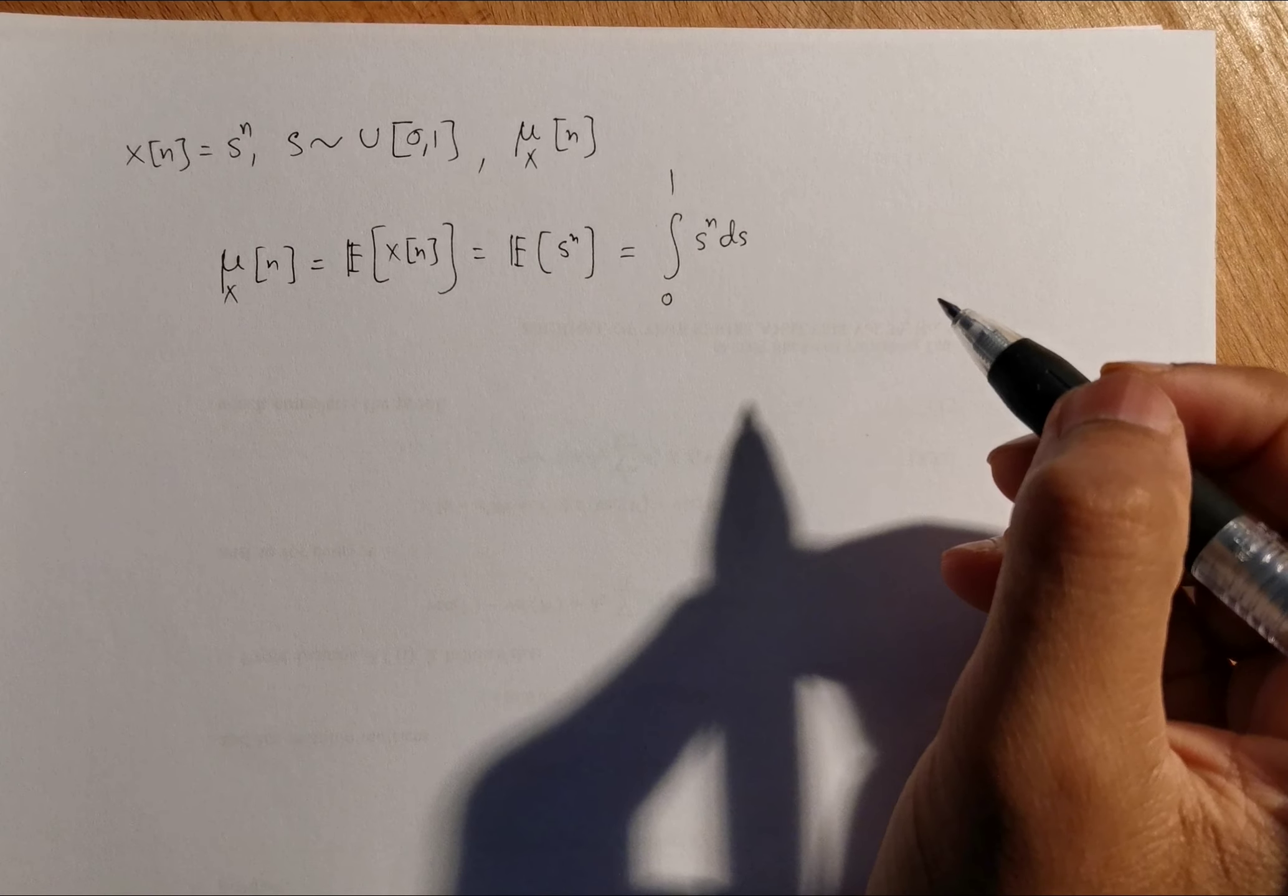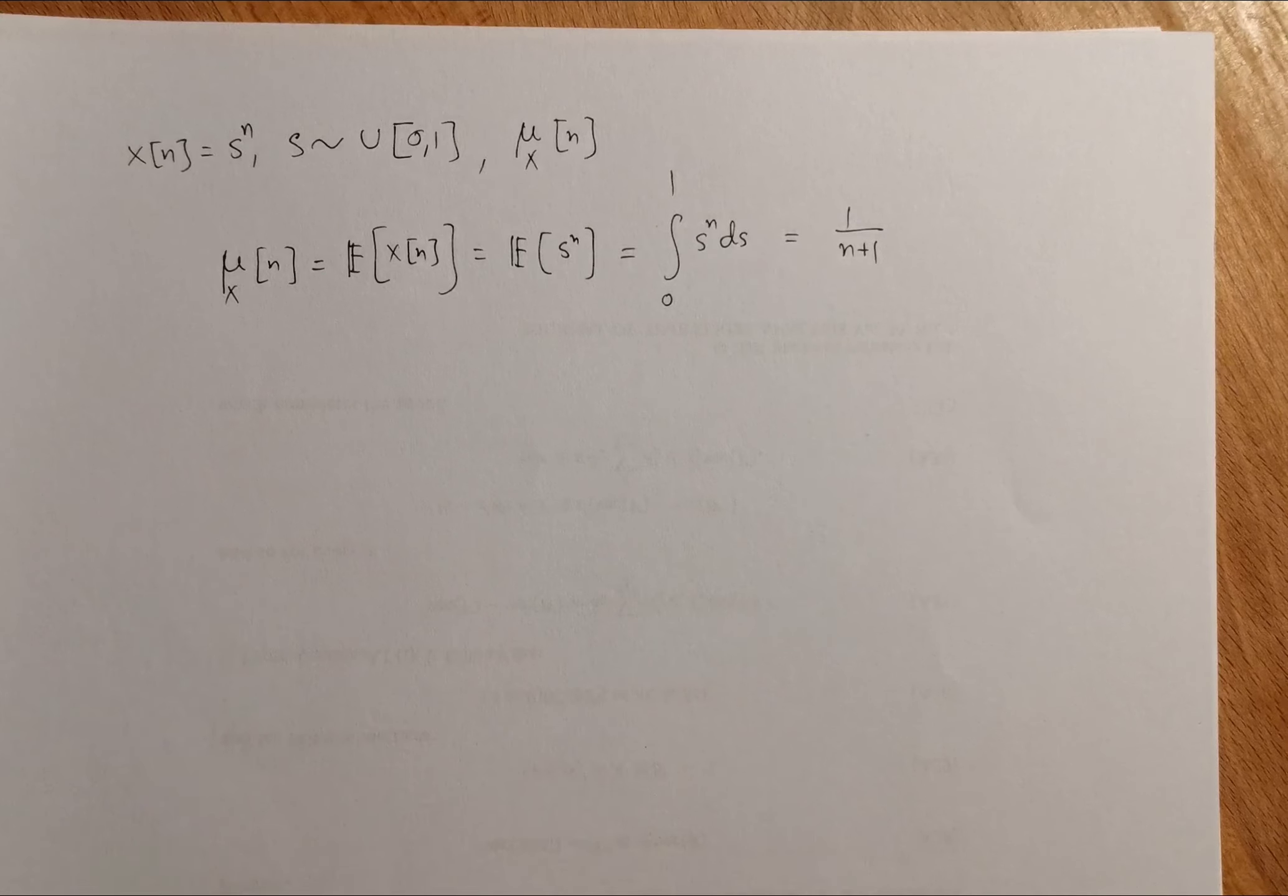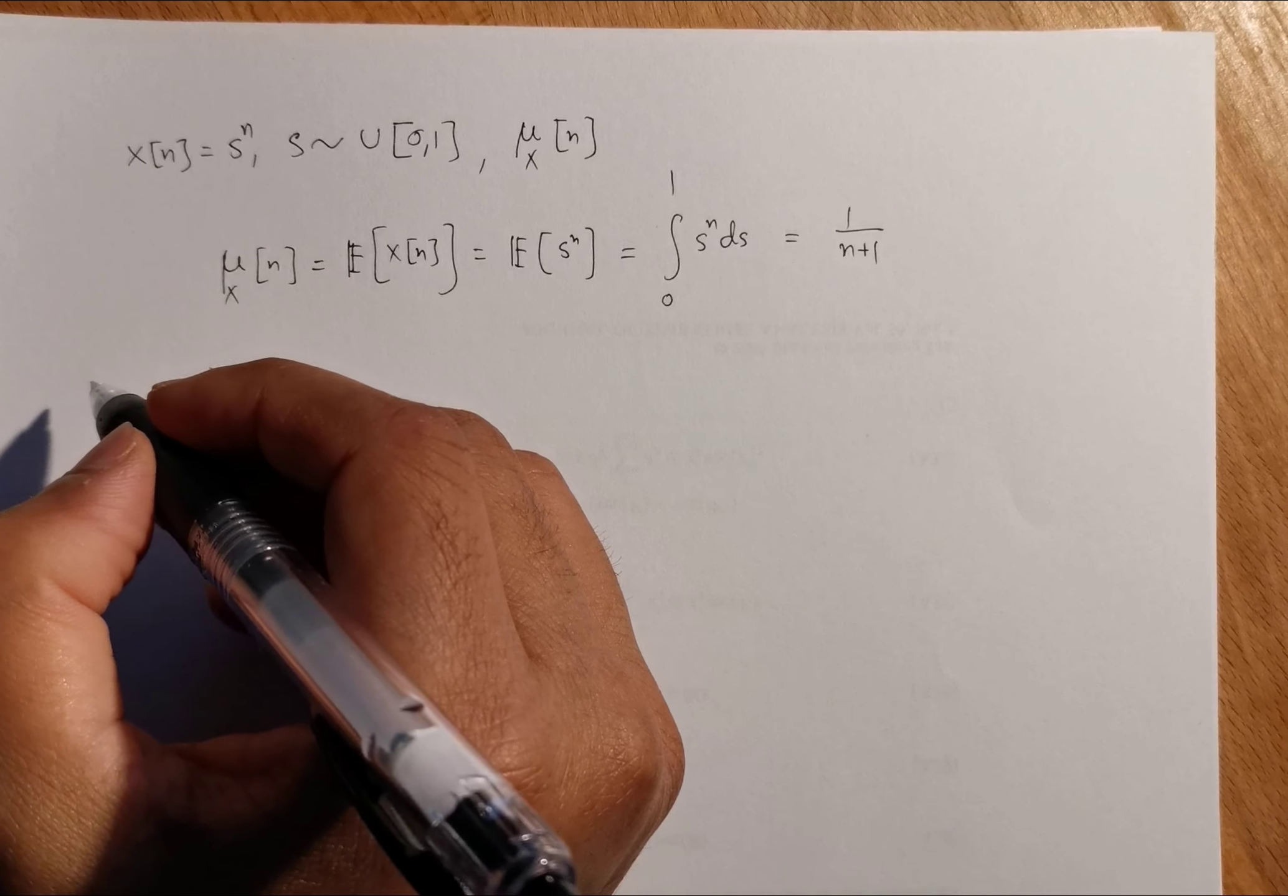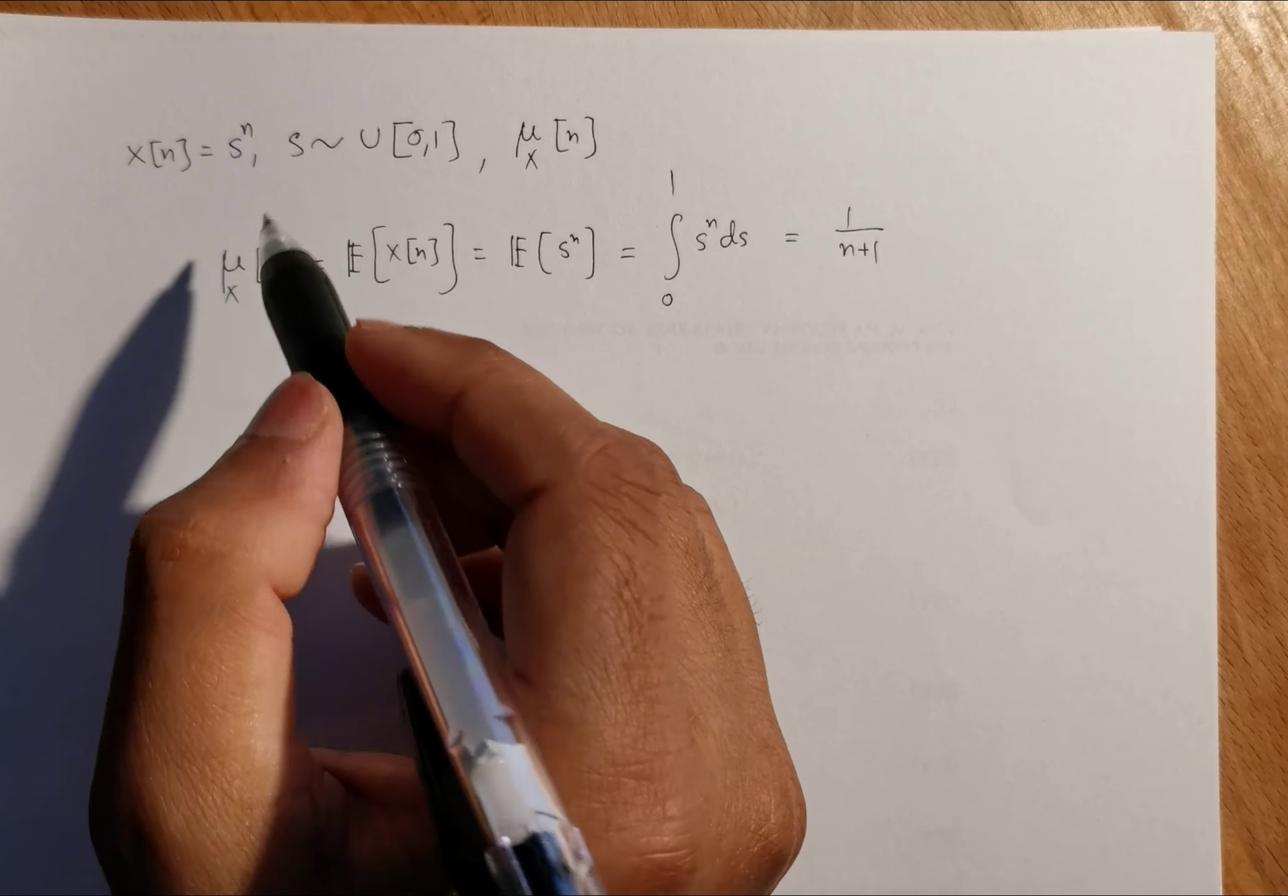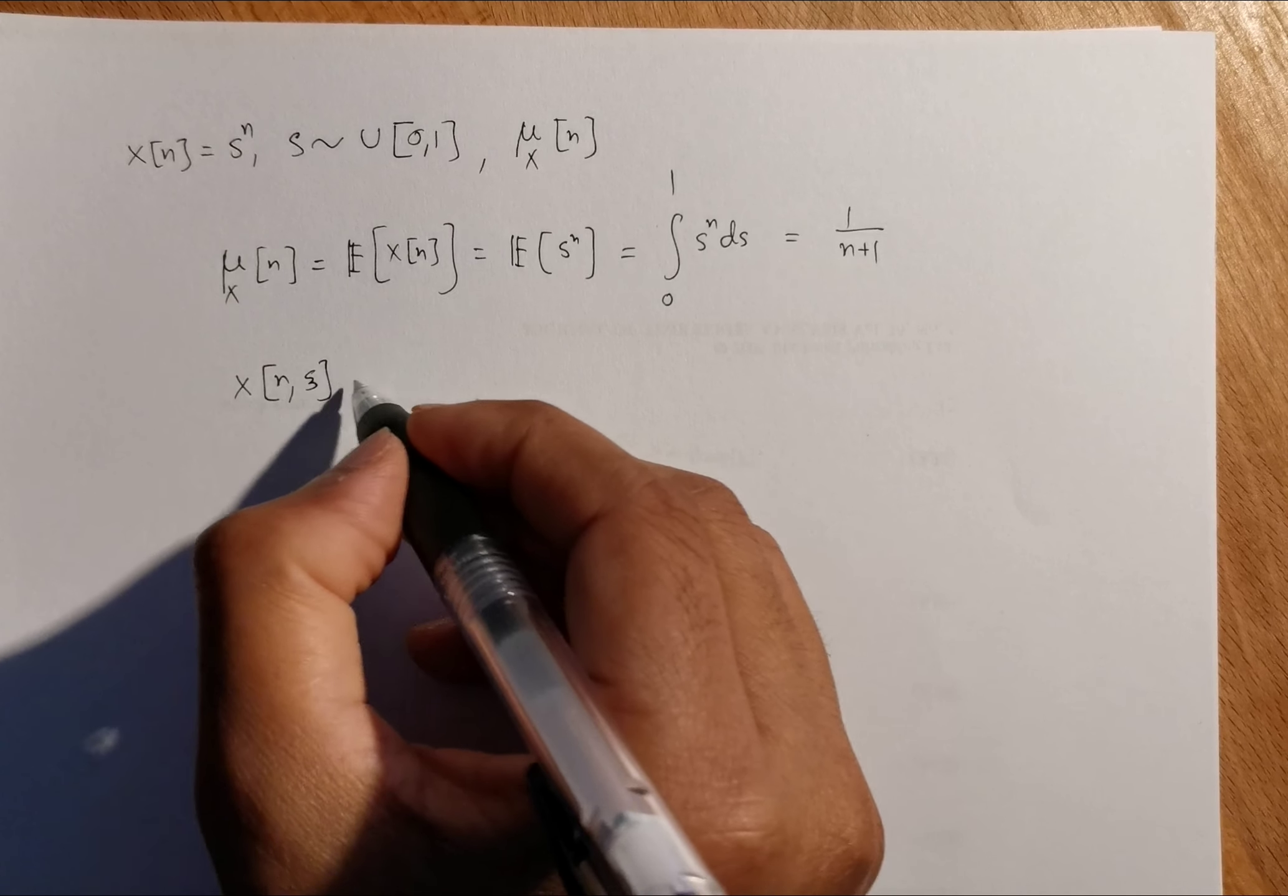This integration is very easy, so you will get 1/(n+1). In this example, the randomness goes with the constant S. We can write in terms of random key notation: x(n,ξ) = s(ξ)^n.